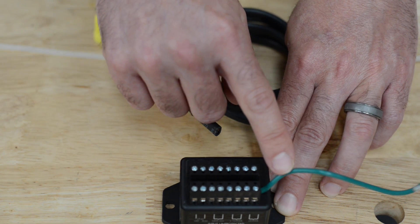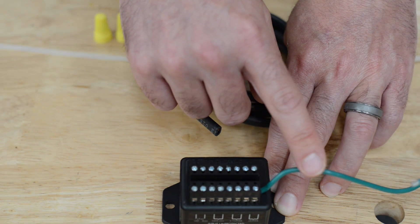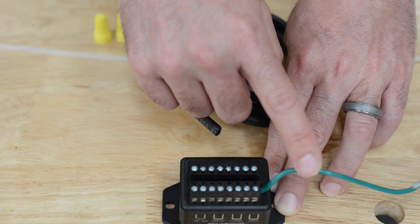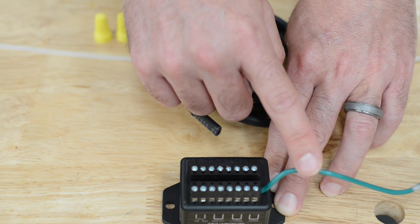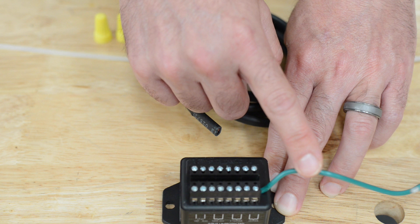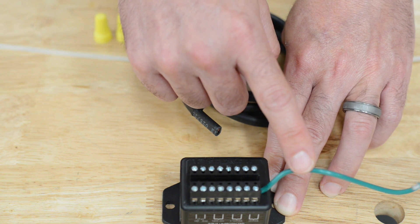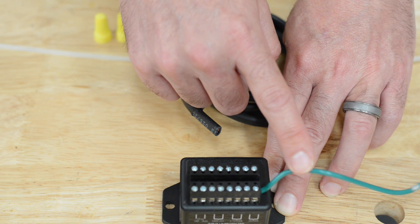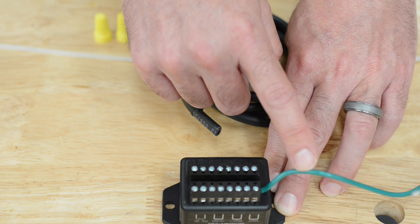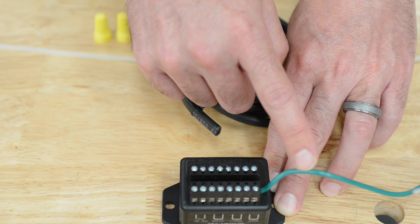The ground lead must be a thick gauge wire. 12 gauge would work out very well for this. It must be as short as possible to a grounding rod. It is best not to use an existing grounding rod that you use for your house. It is best to drive a new grounding rod in the ground right next to the gate opener system.